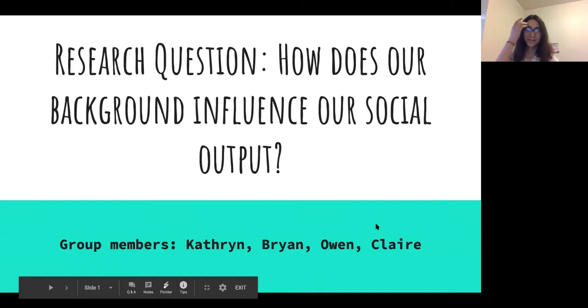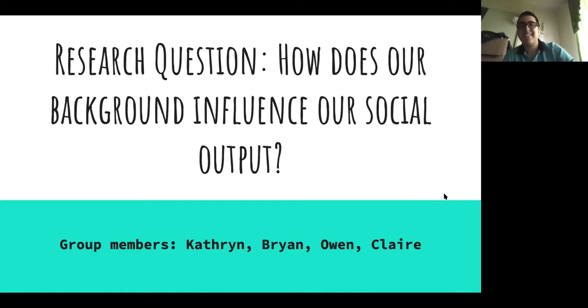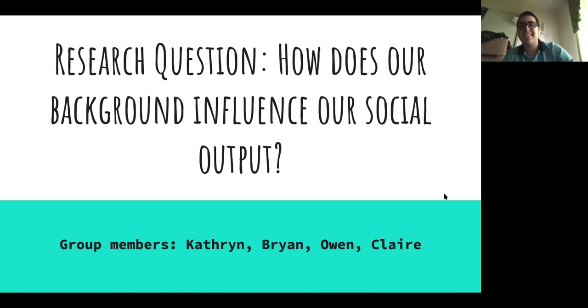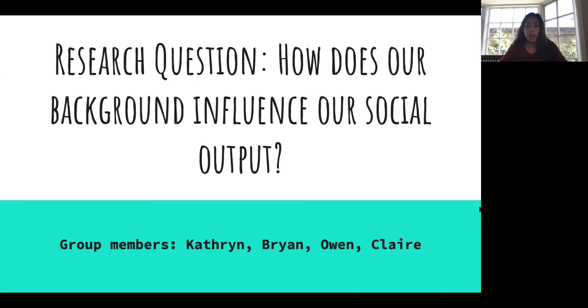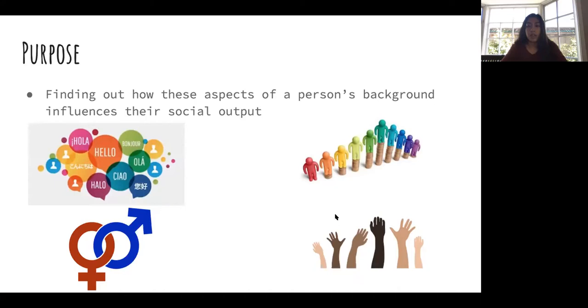The first group introduces themselves: Claire Amistoso, Catherine Paulus, Brian Talazar, and Owen Morgan. Their research question is how does background influence social output, which they define as the way we present ourselves in society, what groups we are part of, and how we interact in those groups.